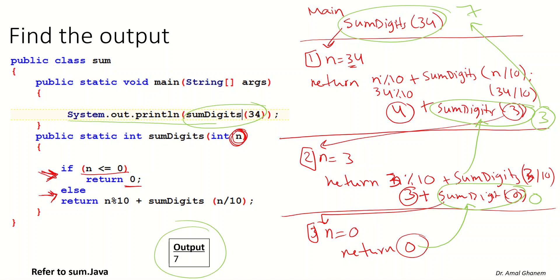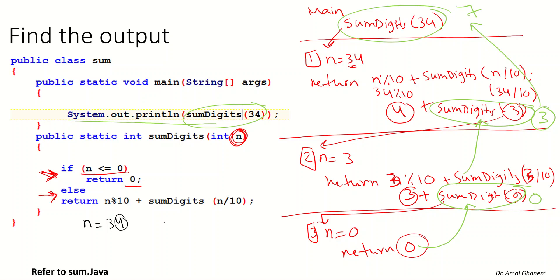So we have only one number as output, which is 7. The idea behind this example is: you take a number like 34 and go from 34 to 3 until you reach 0. When you go back, you do the summation of the digits. We divide the number until we reach 0. If we think about it, for N = 34, we count the digits and take their sum. We take the digit 4 and say plus, then call the method with n / 10 to get rid of the 4 — that's why we use n / 10.